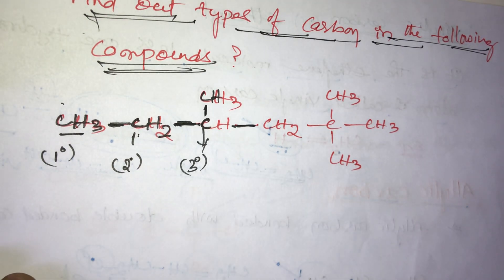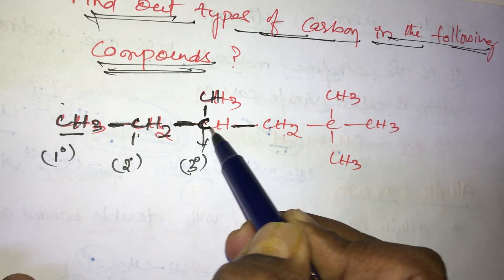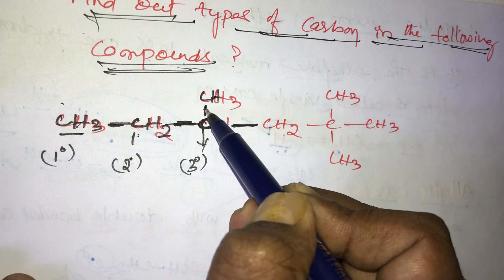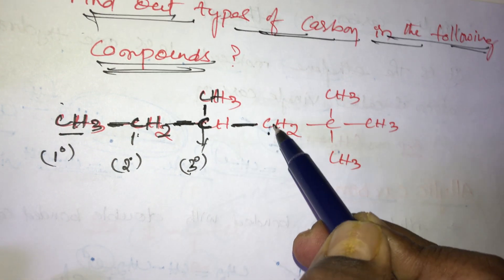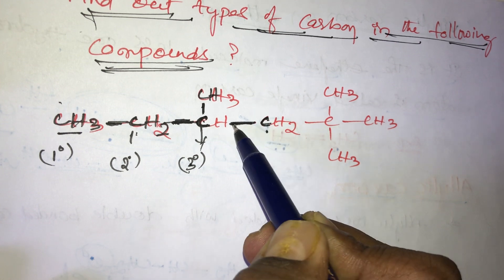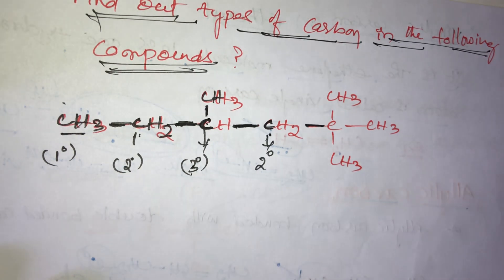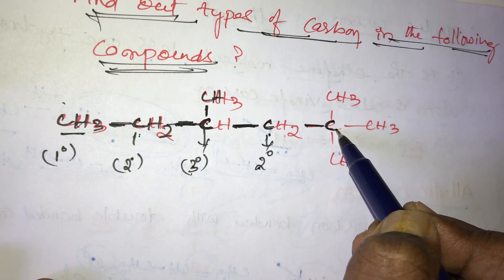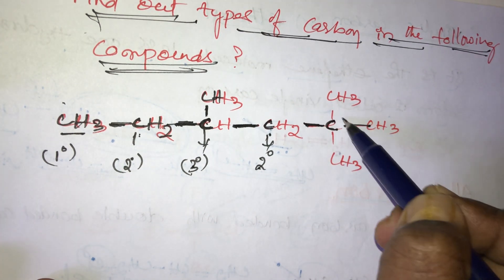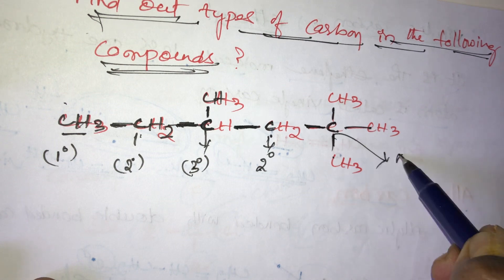Tertiary carbon means when a carbon is bonded with three other carbons — that's why it is called tertiary carbon. This carbon is bonded with left, right, and upper side carbons. What about this carbon? It is bonded with left, right, upper, and lower carbons, so it is called a neo carbon.